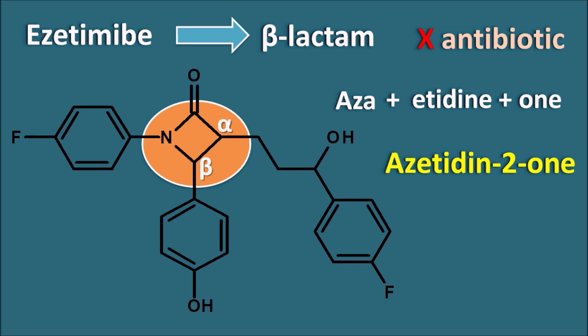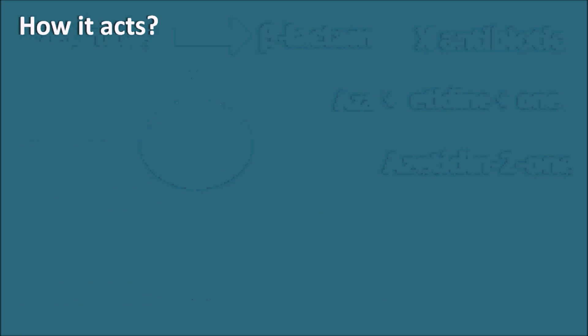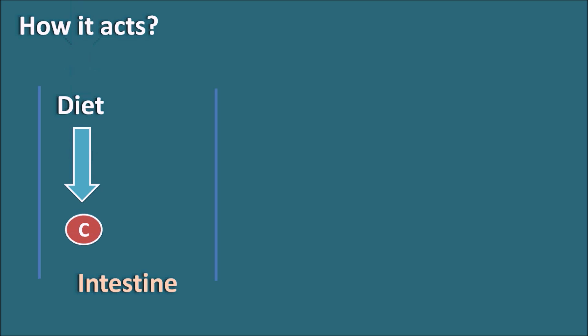Ezetimibe belongs to the chemical class of azetidin-2-one, which is responsible for controlling the absorption of cholesterol. Now let us see how Ezetimibe acts. Suppose this is the small intestine, and the cholesterol coming from the diet is going to be absorbed through the brush border of the intestine.